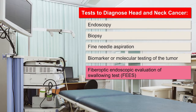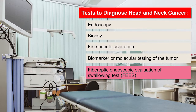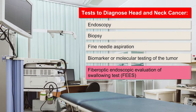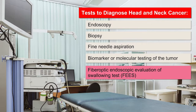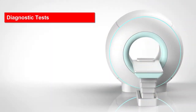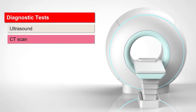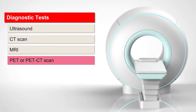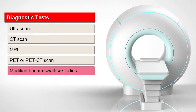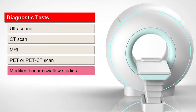A fiber-optic endoscopic evaluation of swallowing test, or FEES, involves a thin, lighted tube inserted through the nose and down the throat to show how you swallow. Your doctor may also use the following diagnostic tests: ultrasound, CT scan, MRI, PET or PET-CT scan, and modified barium swallow studies — a series of X-rays taken after you swallow a barium drink.